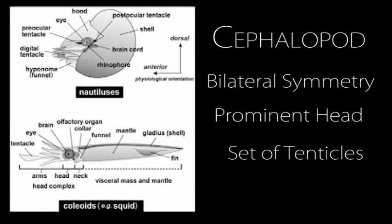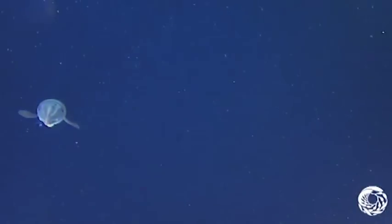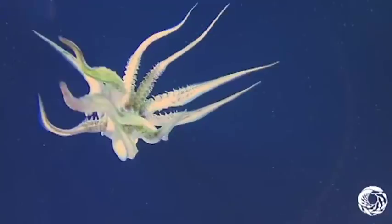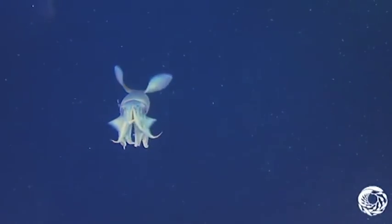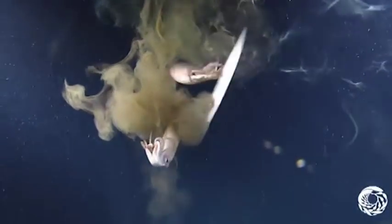Like all cephalopods, these exclusively marine animals are characterized by a bilateral body symmetry, a prominent head, and a set of arms or tentacles. Like most cephalopods, squids have advanced vision, with large eyes on the side of their heads. They also have eight appendages, with two longer tentacles that are used for feeding and mating. Squid use these tentacles and the paired fins on their mantle to propel themselves through the water. Squid also contain ink sacs, used to confuse predators and allow themselves time to escape.